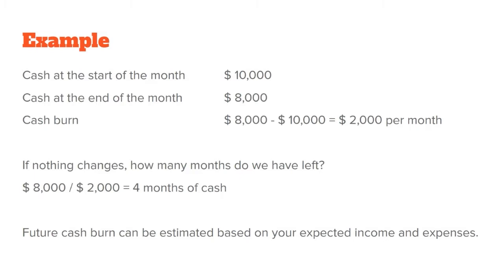How do we calculate cash and cash burn, and how do we use them? Cash is something you know simply by looking at the money in your wallet, cash register, and bank accounts. We start with cash at the start of the month and cash at the end of the month. In our example, that's $10,000 at the start and $8,000 at the end. The difference is $2,000 — meaning we've spent $2,000 in the month, which is our cash burn.